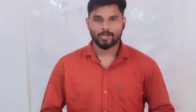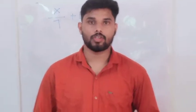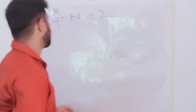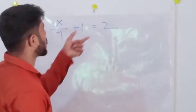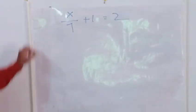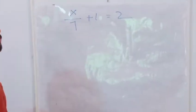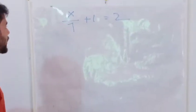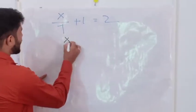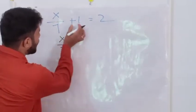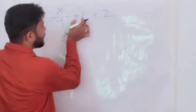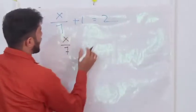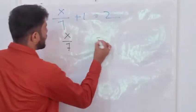Now, question 6.3, question number 3D. X by 7 plus 1, which is equal to 2. Here we are going to find out the value of X by using the transposition method. First of all, X by 7 I am keeping like that. Then this plus 1, I am going to take into the right hand side.